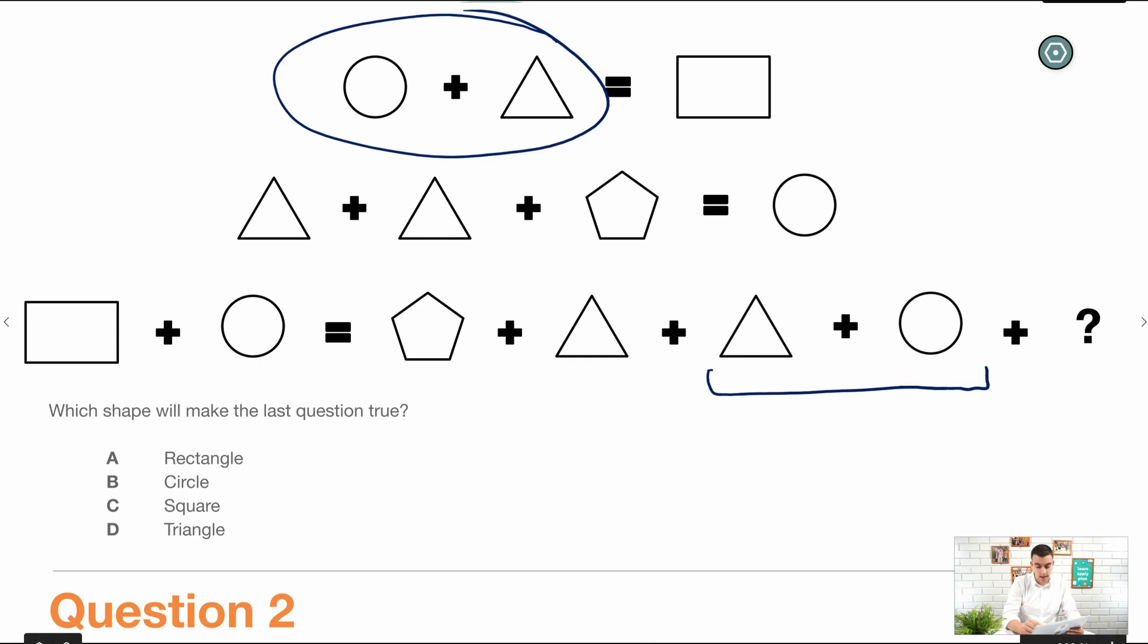So if we cross this out and we put in a rectangle here, now we have rectangle plus circle equals pentagon plus triangle plus rectangle.